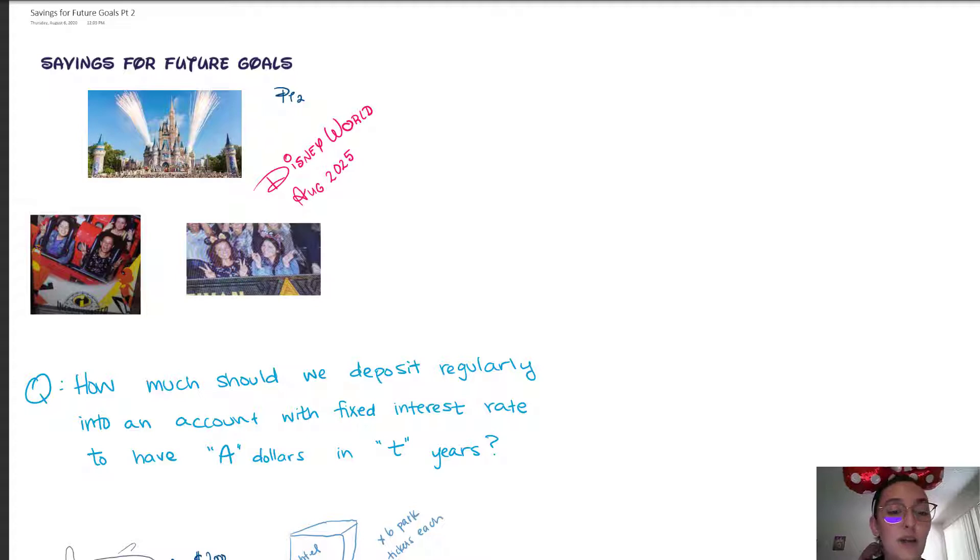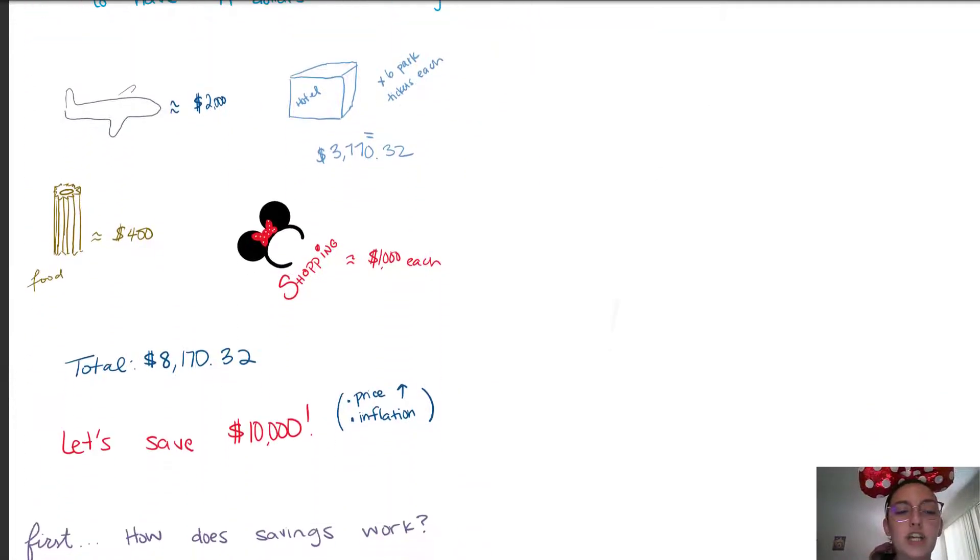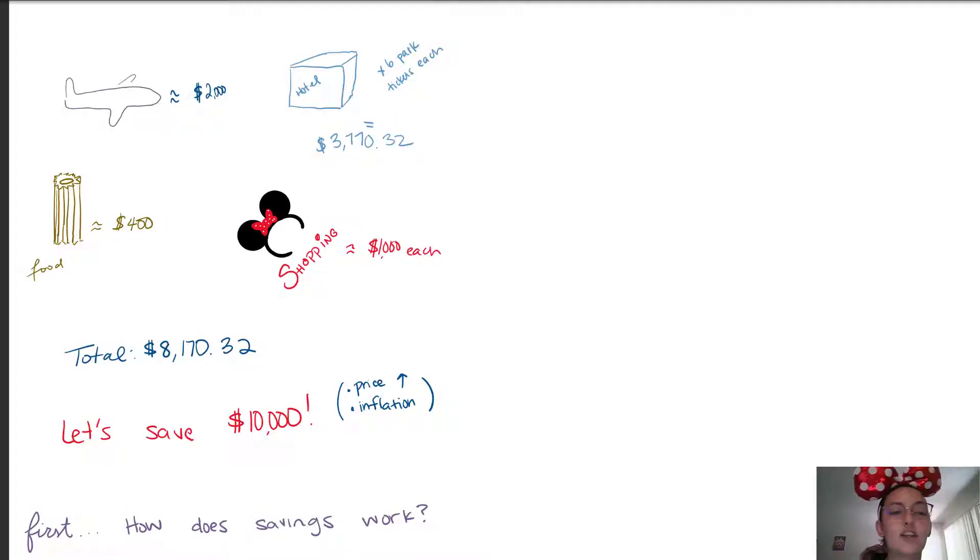The question that we want to ask is how much should we deposit regularly into an account with a fixed interest rate to have a certain amount of dollars after a certain amount of years? After some research I determined that the flight and flights were going to be two thousand dollars for both of us.